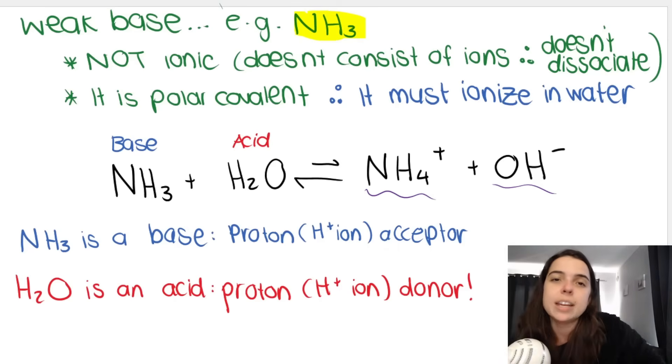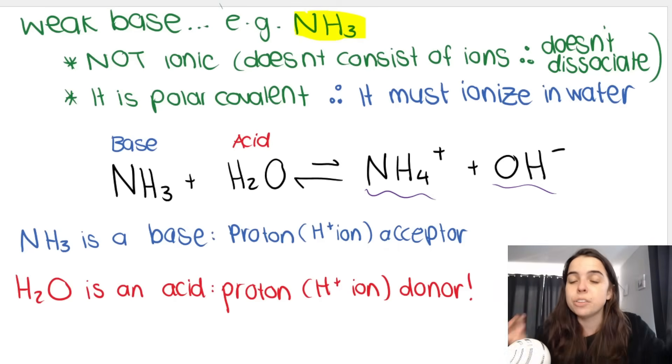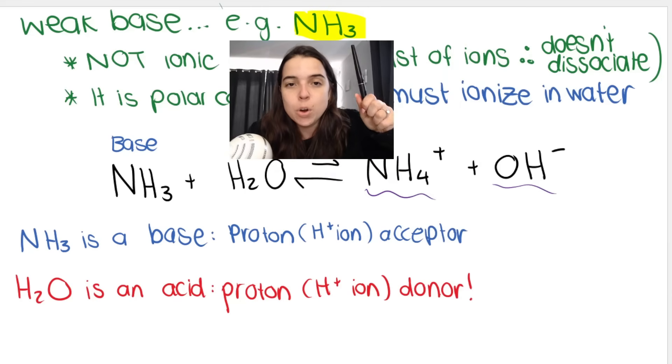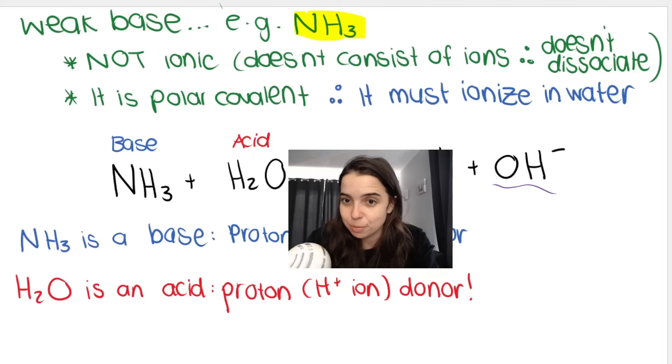Now, remember we said that acids ionize, so they react with water, and bases dissociate, so they break up in water. We put the water on the arrow. But I said that's because bases are generally ionic substances. But we have an exception: ammonia, NH3.